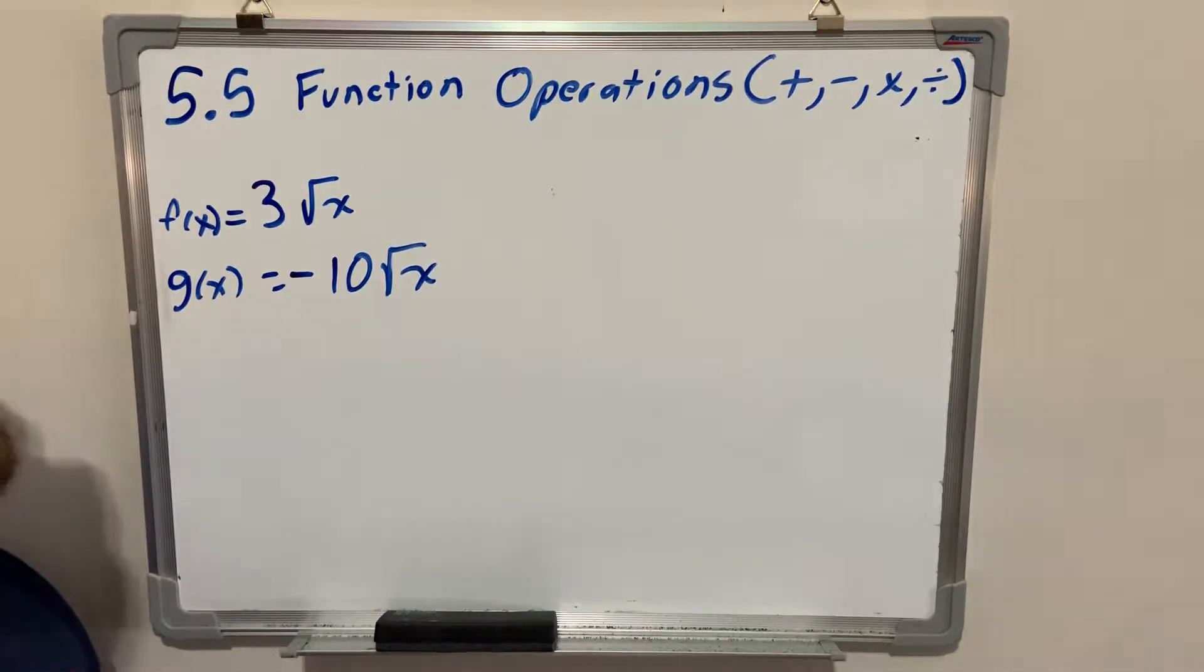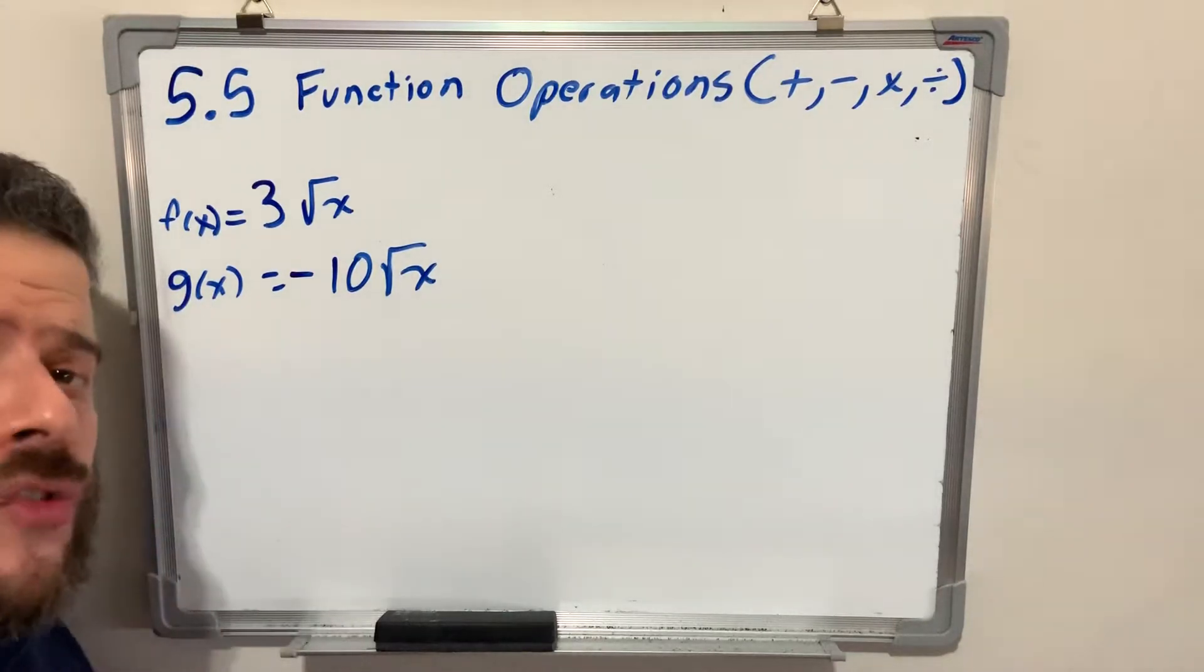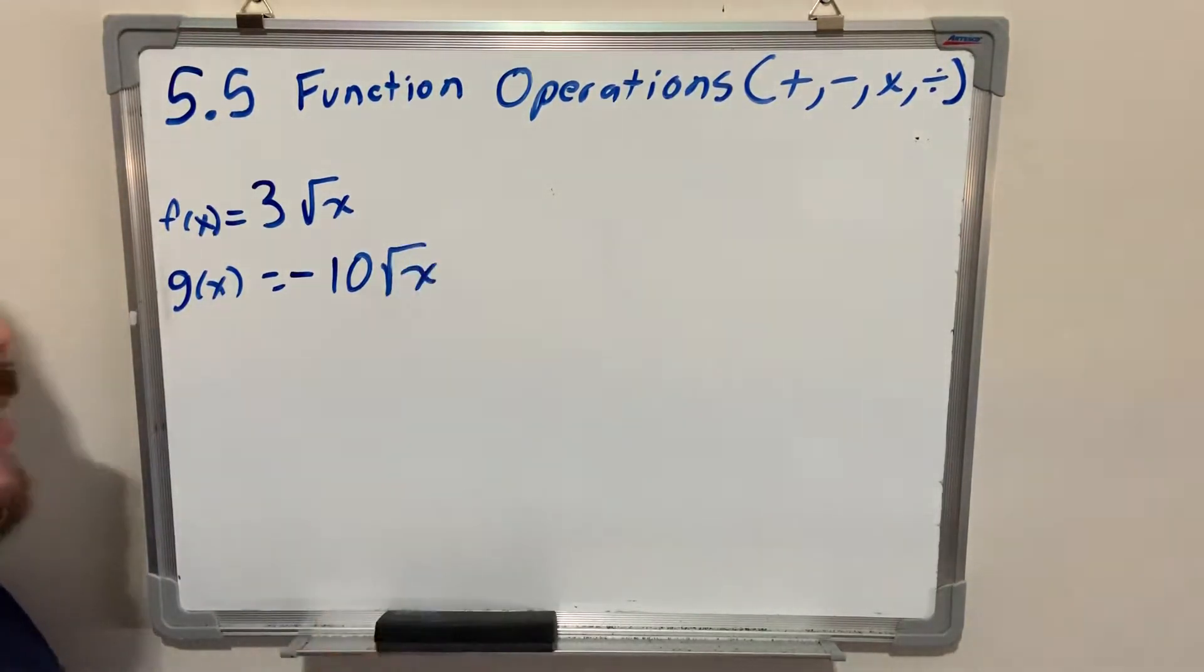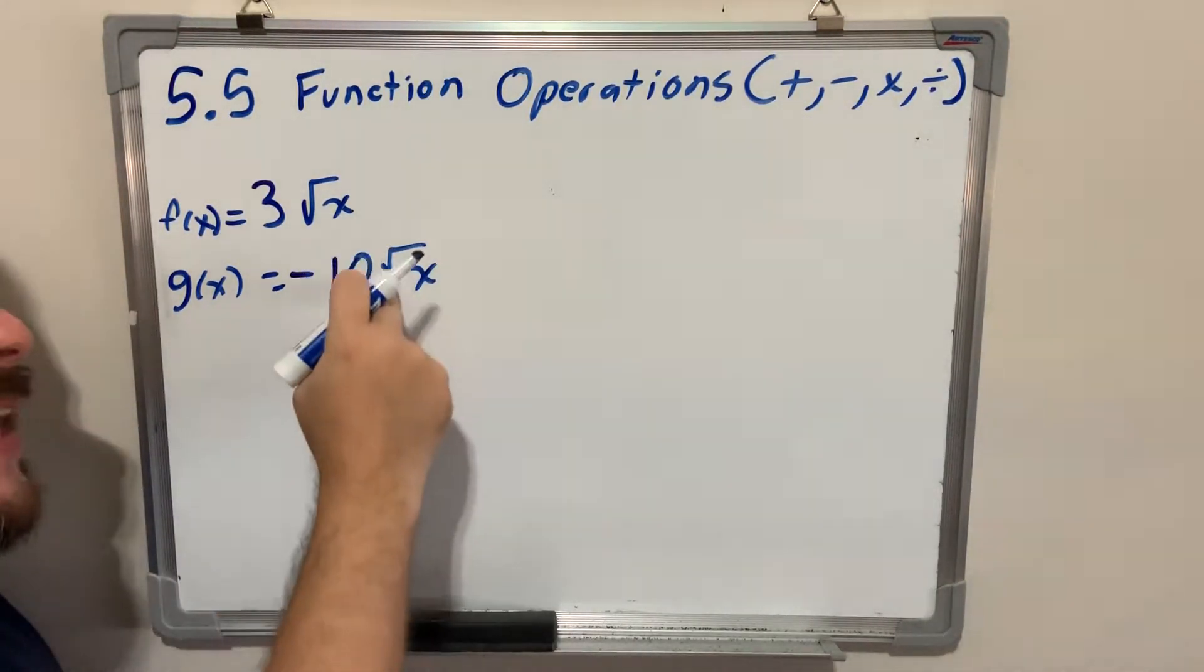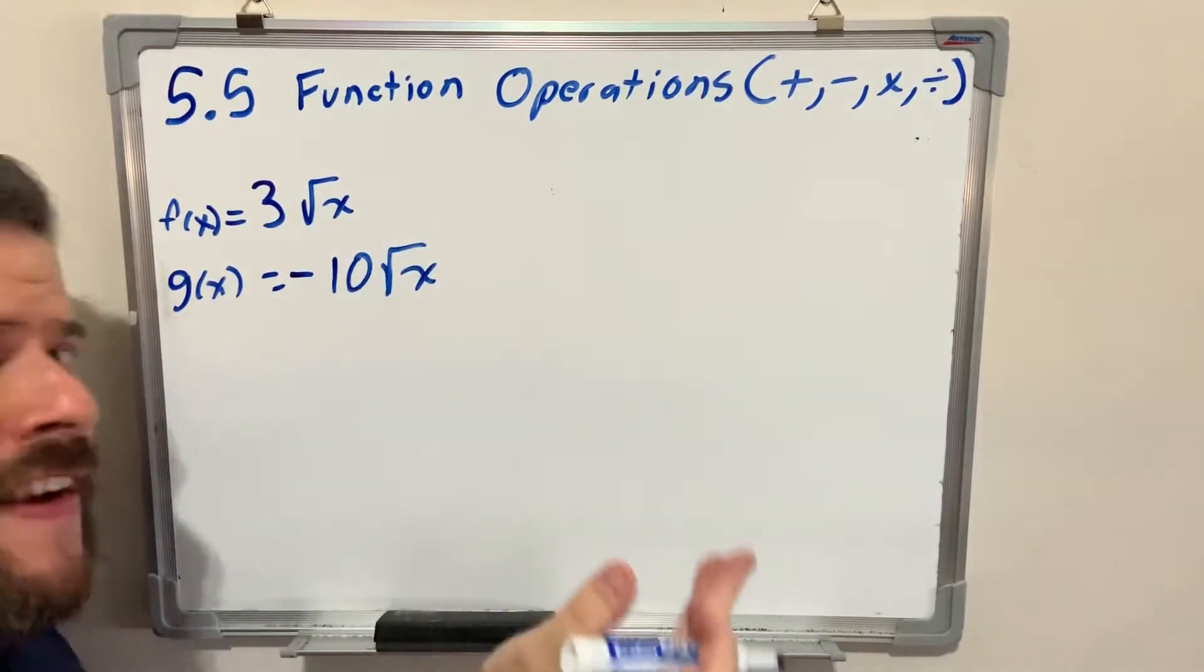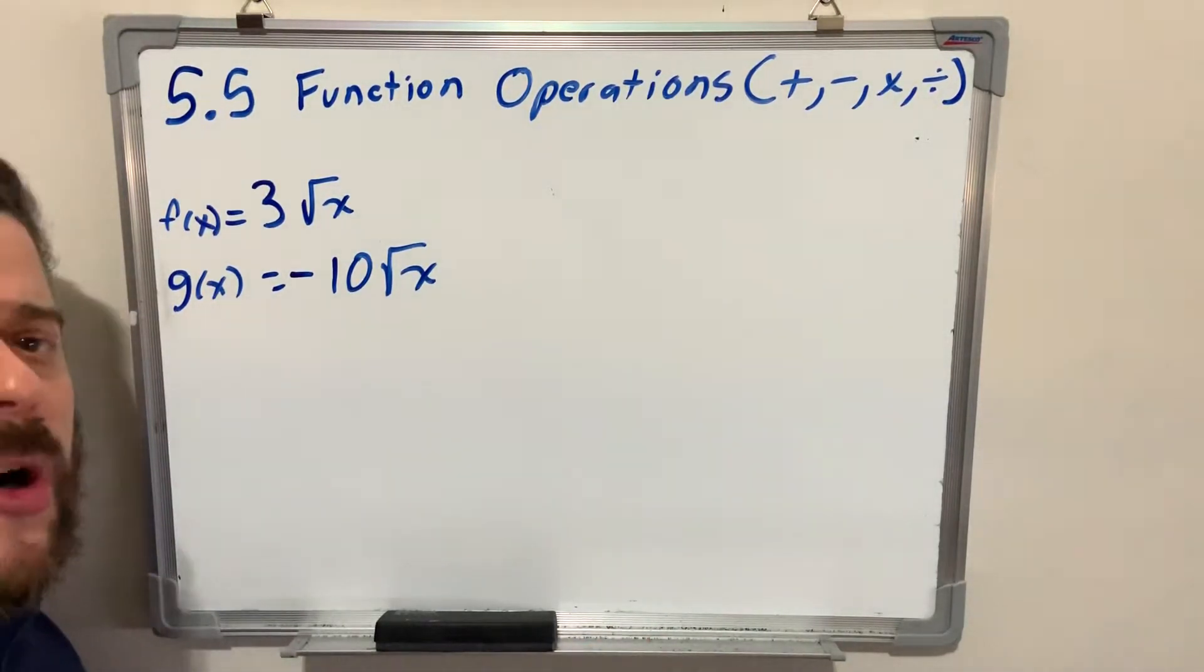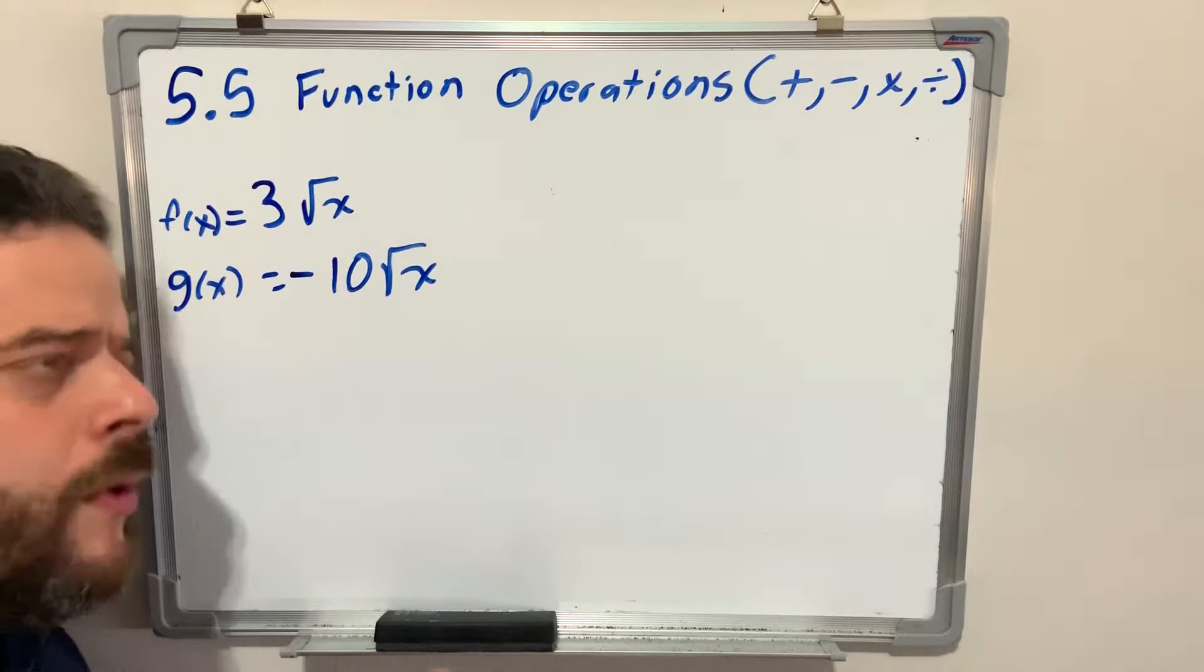In order to add functions, this is example one, page 270. I have to make sure that if I am given radicals, they are identical. Remember, you can treat radicals as variables A, B, C, X, Y, Z, and then perform normal algebraic operations with them.